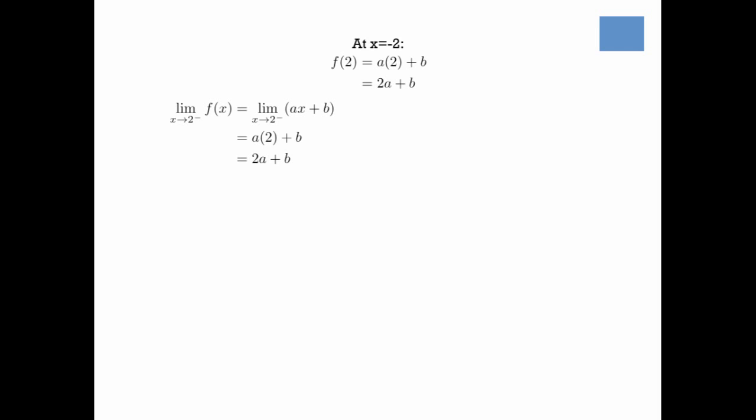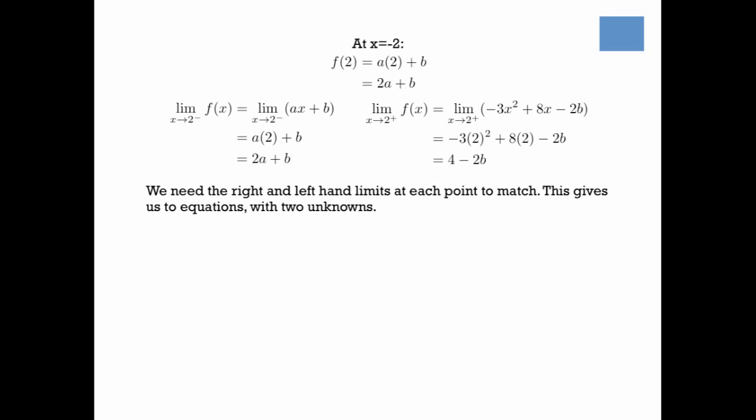Now let's look at what happens at x equals 2. The function value at 2 is 2a plus b. Looking to the left of 2, that's the second function ax + b, and plugging in 2 gives us 2a plus b. To the right of 2 we have the parabola, and plugging in 2 gives us 4 minus 2b. So we need the right and left-hand limits at x equals 2 and x equals minus 2 to match.